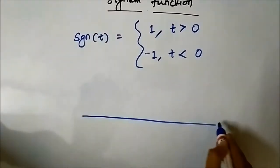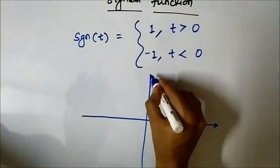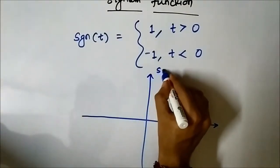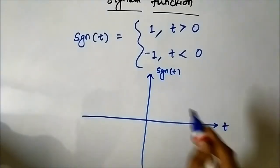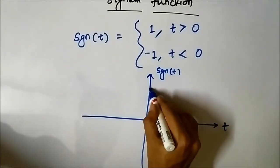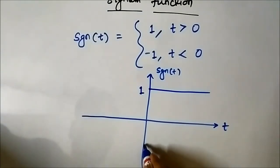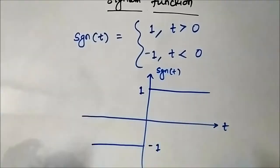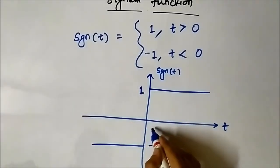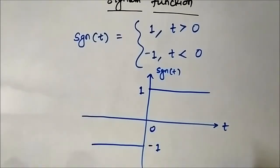First, let's draw the time axis, then the amplitude — this is sgn(t). For positive time, its value is plus 1 constant, and for negative time, the value is minus 1. This is what the signum function looks like.